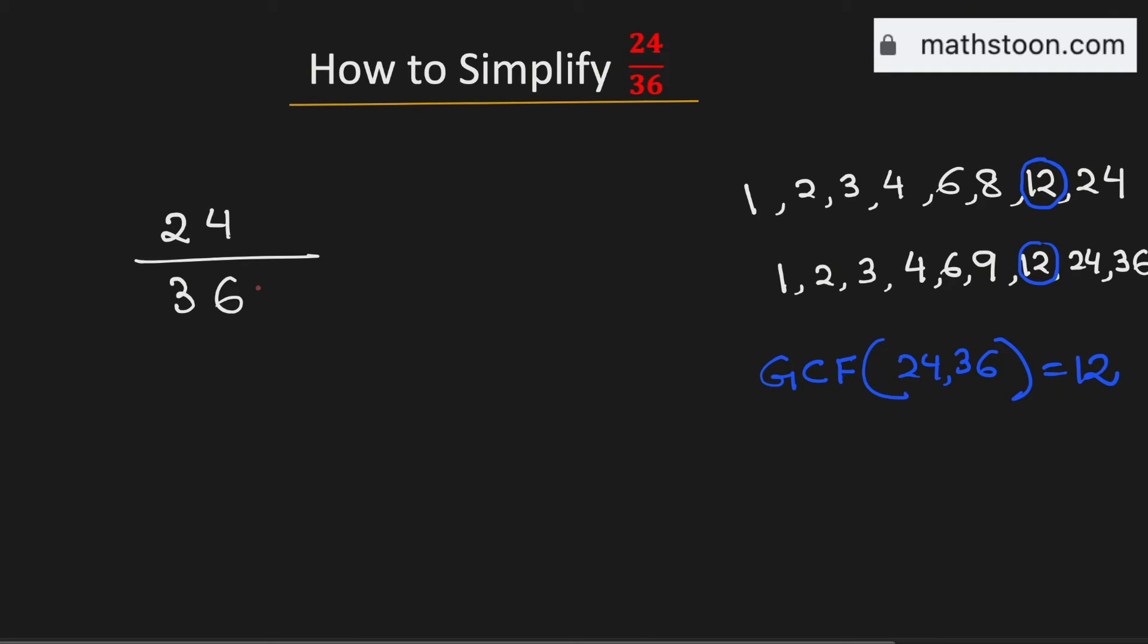Now to simplify this fraction we will divide both the numerator and the denominator by their greatest common factor which is 12. And by doing so we get 2 in the numerator and 3 in the denominator.